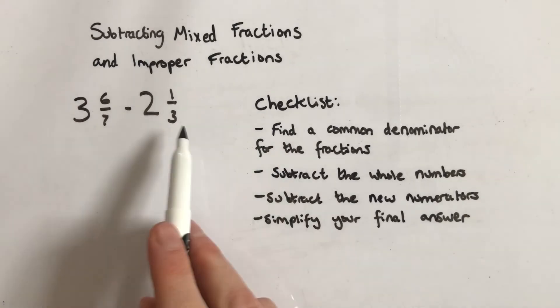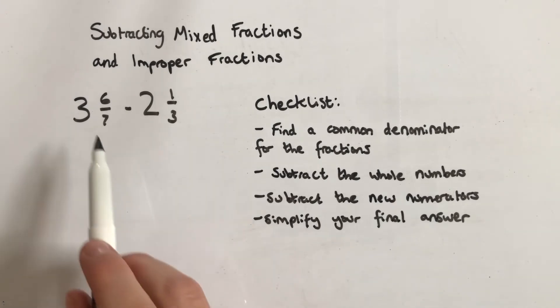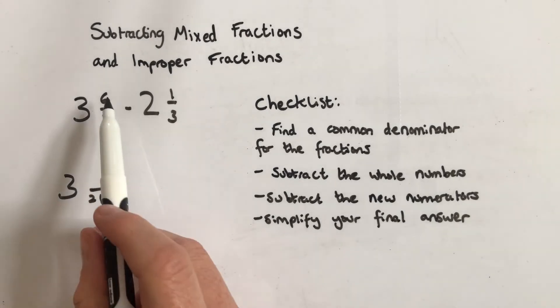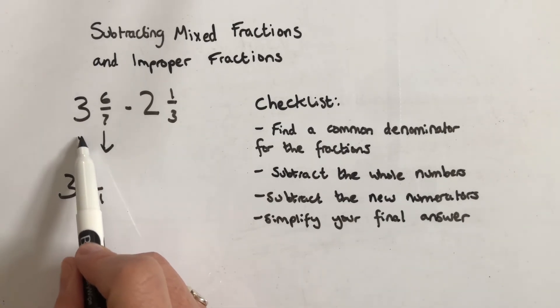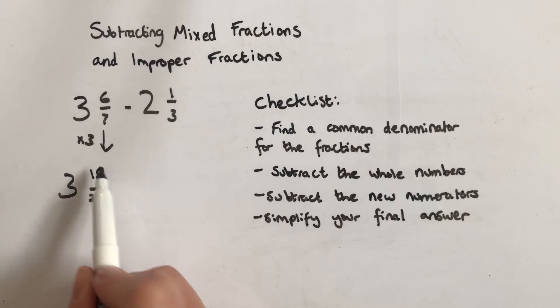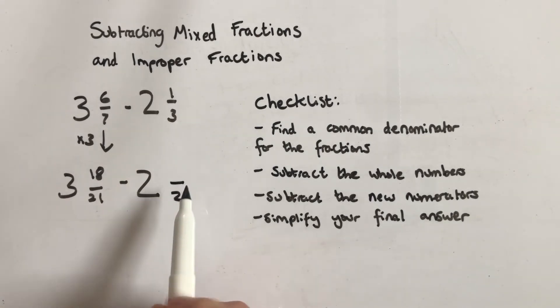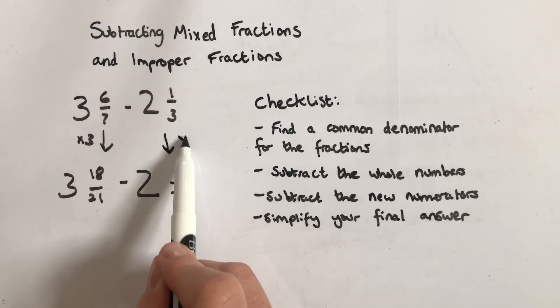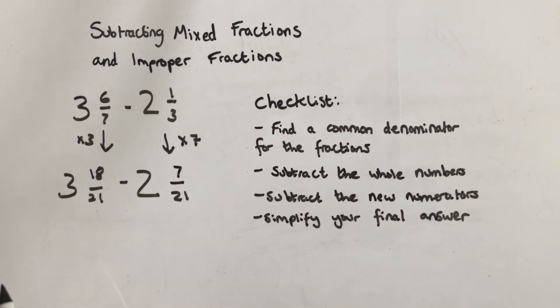So it says find a common denominator for these fractions. The lowest common denominator for these is going to be 21. So if I have 3 over 21 at the bottom here, I had to change that 7 into 21—I had to multiply by 3. So I'm going to multiply top and bottom by 3, so 3 times 6 is 18. Now I've got a whole number 2. Notice these whole numbers don't change—you just leave them unchanged the whole time. To make this fraction over 21, I had to multiply by 7. So 3 times 7 is 21, so I multiply the top by 7 as well to get 7 over 21.